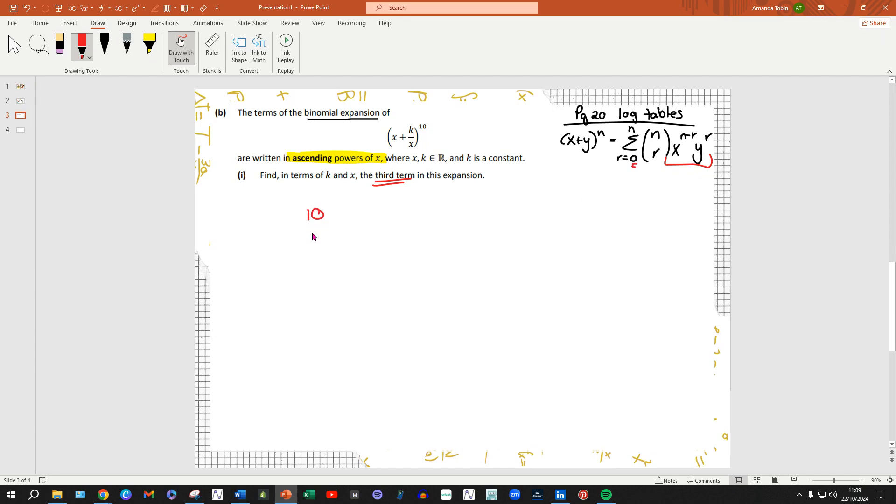If we're looking for the third term, that means my r is equal to 2 because 0, 1, 2, we're starting at 0. So I'm going to have 10 choose 2. Normally it would be x to the 10 minus 2, but in our situation that's not the case because we are ascending, not descending. Our x value is going to have a power of 2. Because the x and the y are opposites in terms of their power situation, we need to represent k over x to the power of 8. When we work this out, we have 10 choose 2 which gives me 45, x squared multiplied by k to the power of 8 over x to the power of 8. There's going to be some division happening, so we end up getting k to the power of 8 over x to the power of 6. That's our answer for part B part I.